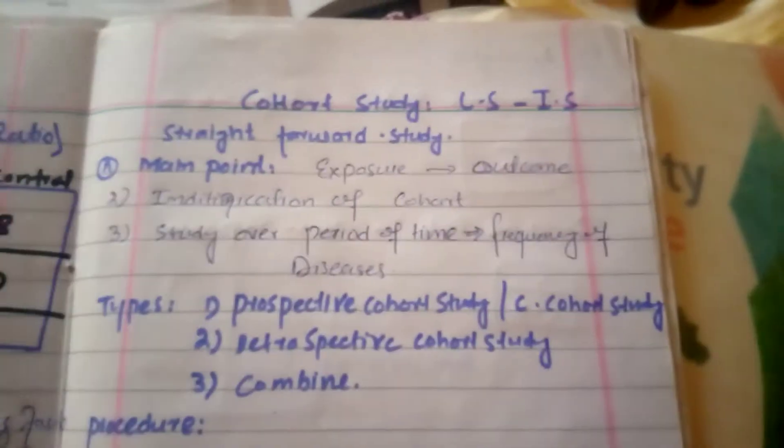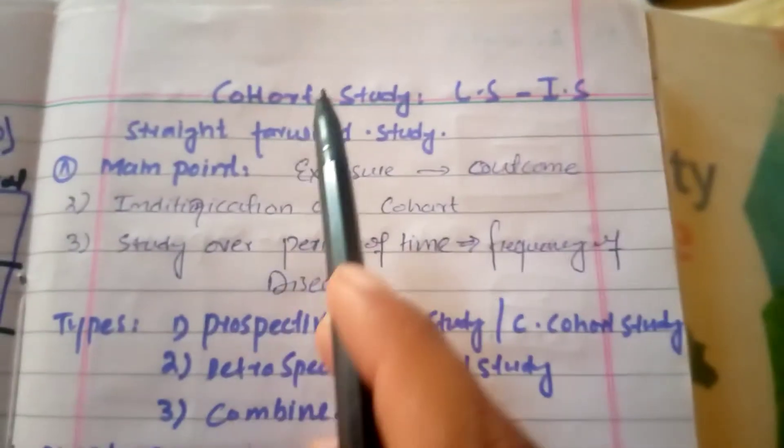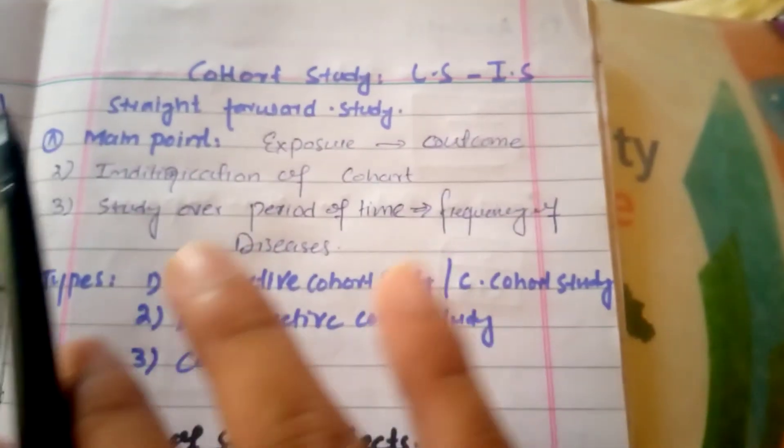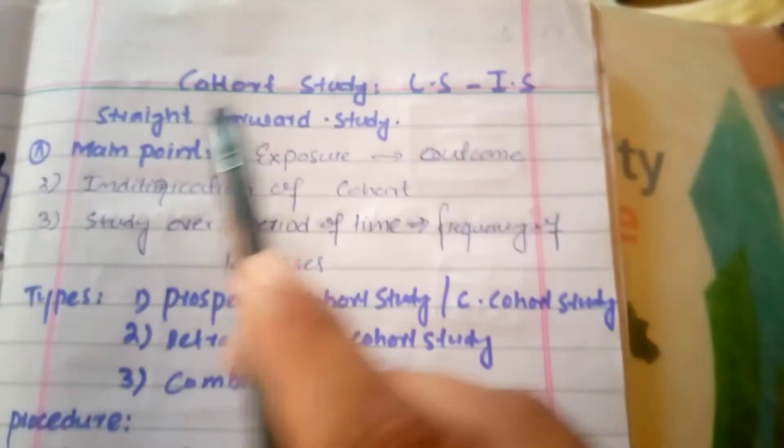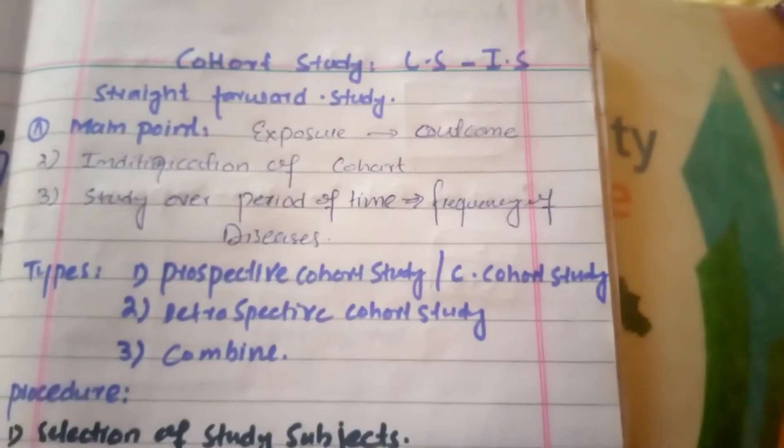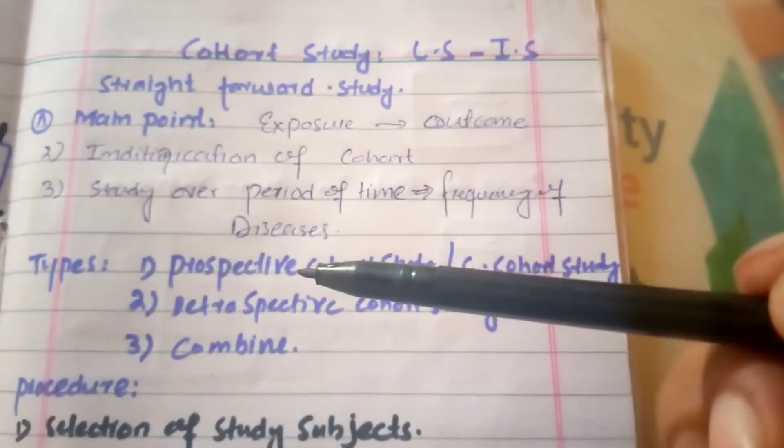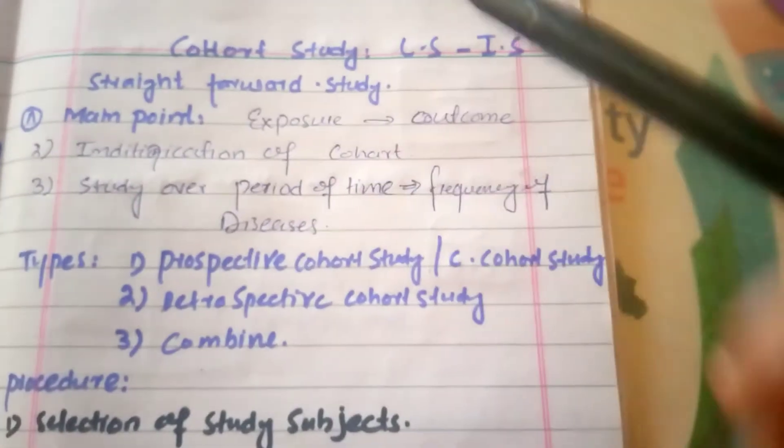Today's video is about what is cohort study. Cohort study - first, the word cohort is called a group of people which study for a specific period. The people have the same common characteristics and properties which we are studying.